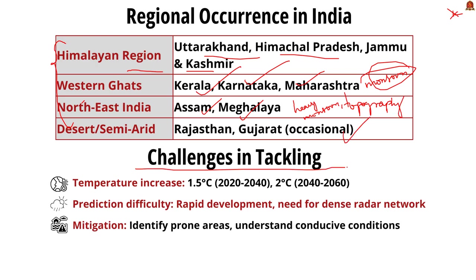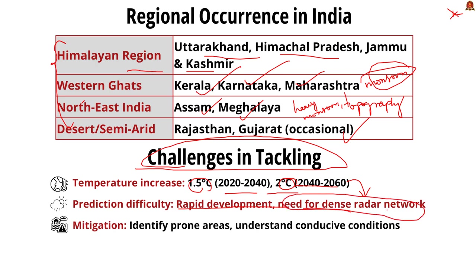Desert and semi-arid regions like Rajasthan and parts of Gujarat also occasionally experience cloudbursts during monsoon. Climate projections indicate further temperature increases of 1.5°C during 2020–2040 and 2°C during 2040–2060, potentially exacerbating cloudburst events. Predicting cloudbursts remains a significant challenge — a dense network of radars would be required to detect them, but this would be expensive. However, meteorologists can identify areas prone to heavy rainfall and pinpoint conditions conducive to cloudbursts to help mitigate damage.